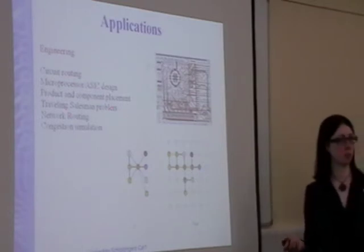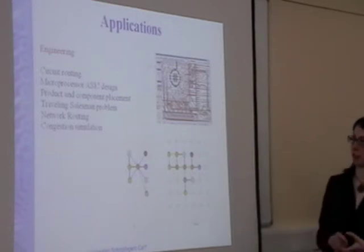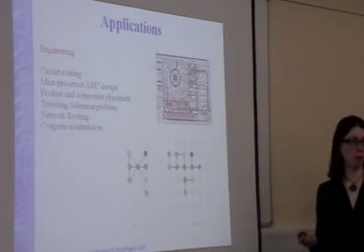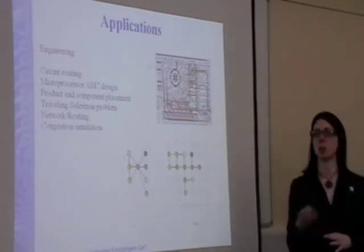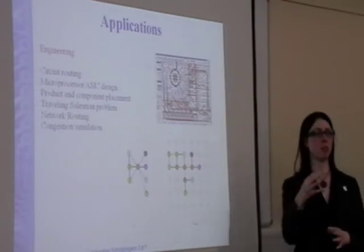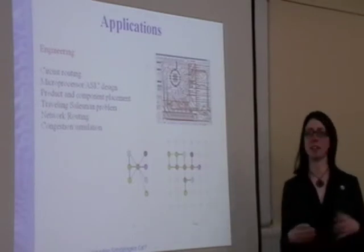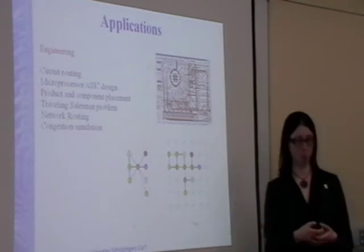So things like network routing, for example, is another one. Finding the best configuration for this. And also things like traffic and congestion simulation when you're trying to put in a new road. You want to see how that will affect all the other roads in the nearby facility. And again, this maps onto the same type of problem.